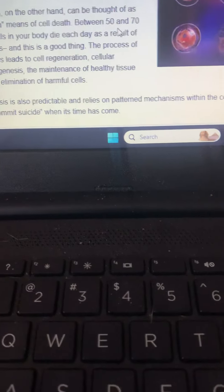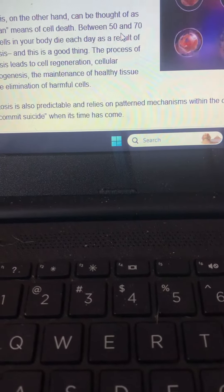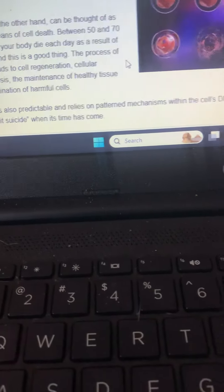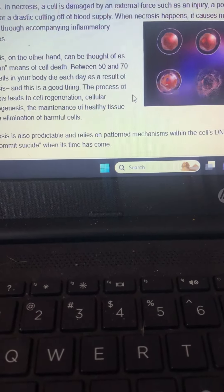On the other hand, it can be thought of as a clean means of cell death. Between 50 and 70 billion cells in your body die each day as a result of apoptosis, and this is a good thing. The process of apoptosis leads to cell regeneration